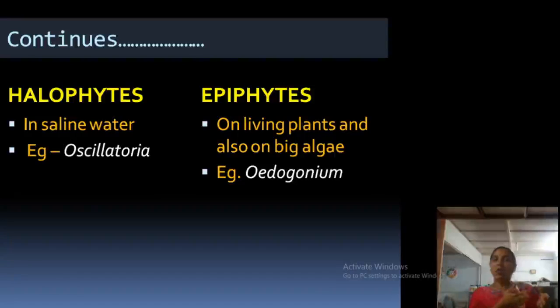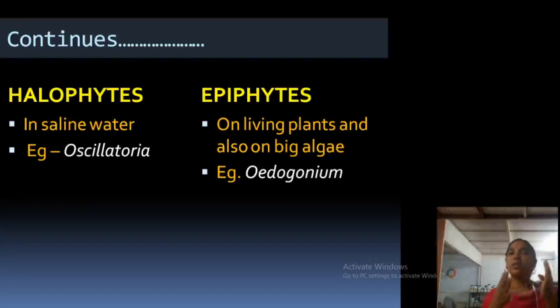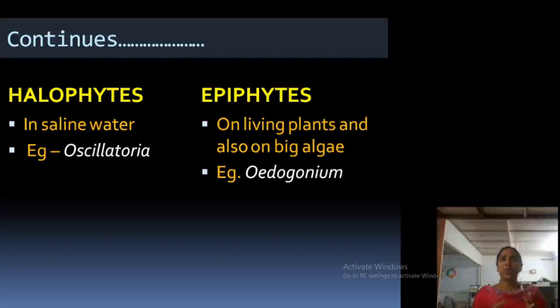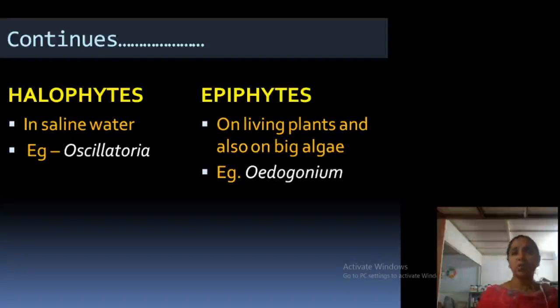Halophytes and epiphytes are the next categories. Halophytes means salt-water-loving groups — they occur in saline water. An example is Oscillatoria. Epiphytes are those present on living plants and also on the surface of other large algae. Some epiphytes are seen attached on grasses, while some are attached on large macroscopic algae growing in water, with smaller algae attached around them.